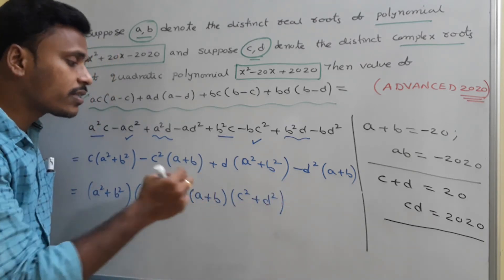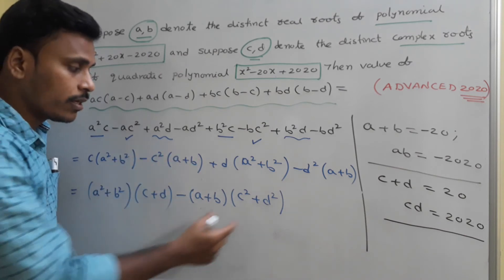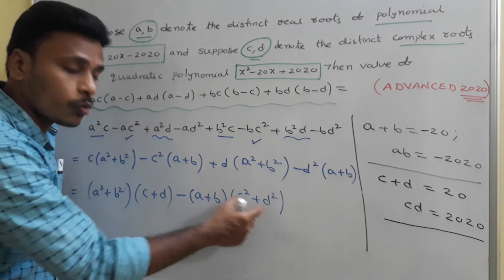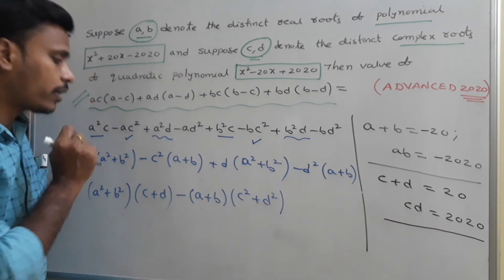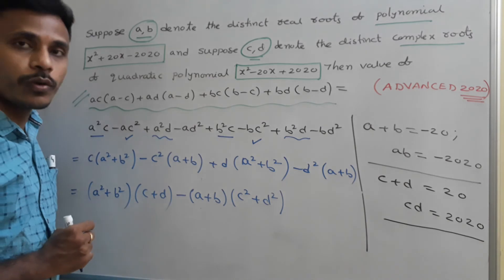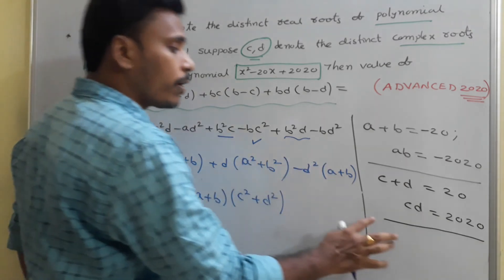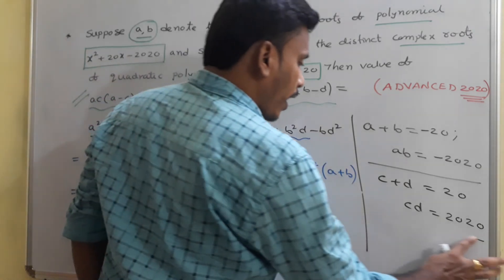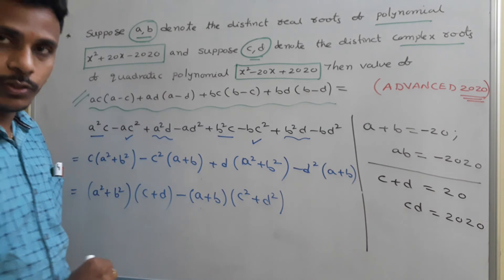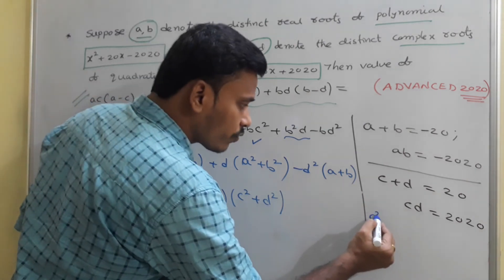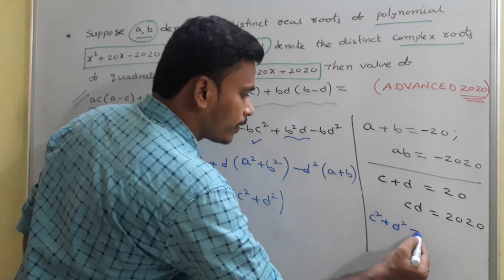Now everything is expressed in terms of a, b, c, d: c² + d², a + b, c + d, a² + b². Since we have c + d, we need to calculate c² + d².